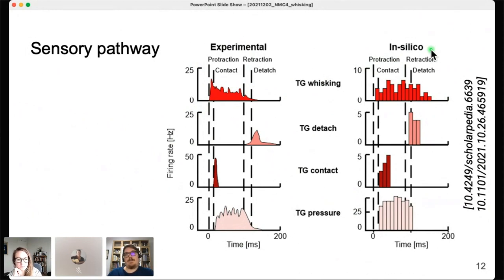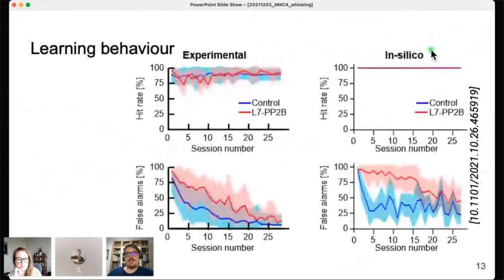Then again, the behavior that we wanted to model is the fact that at the beginning, mice start licking very frequently both during go and no-go trials. The hit rate is the correct licks in go trials; false alarms are licks during no-go trials. At the beginning, false alarms are high, and then it decreases with learning.